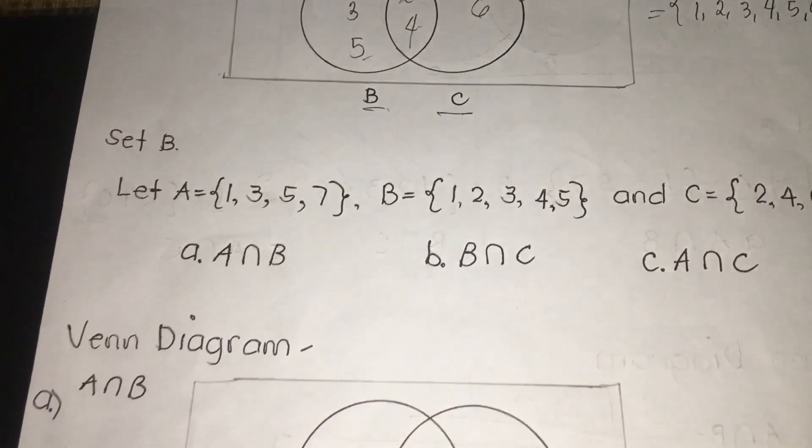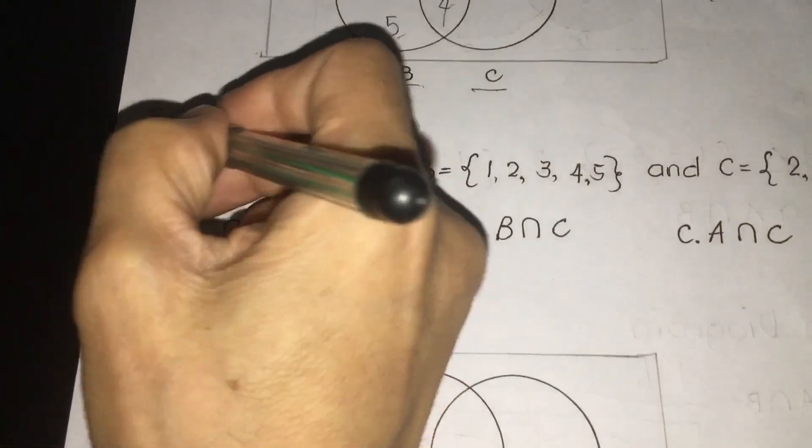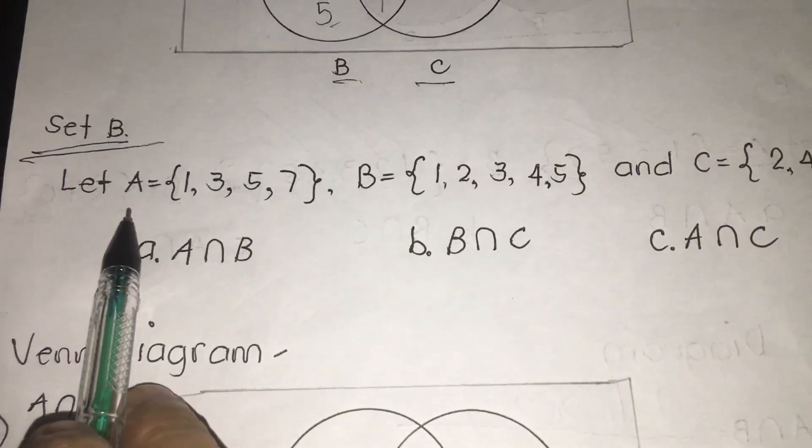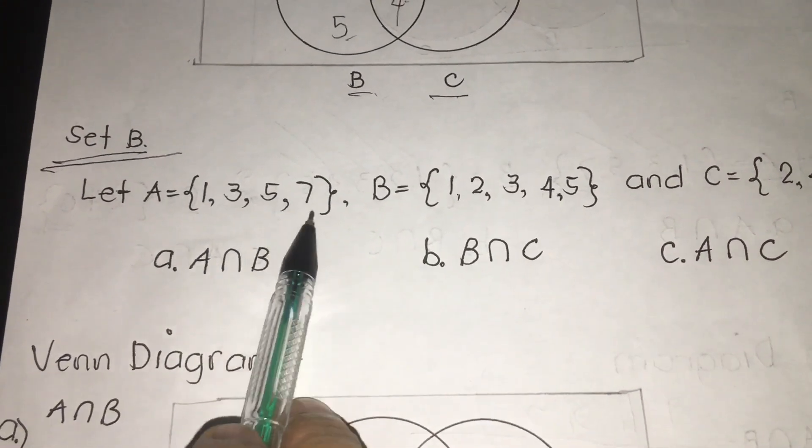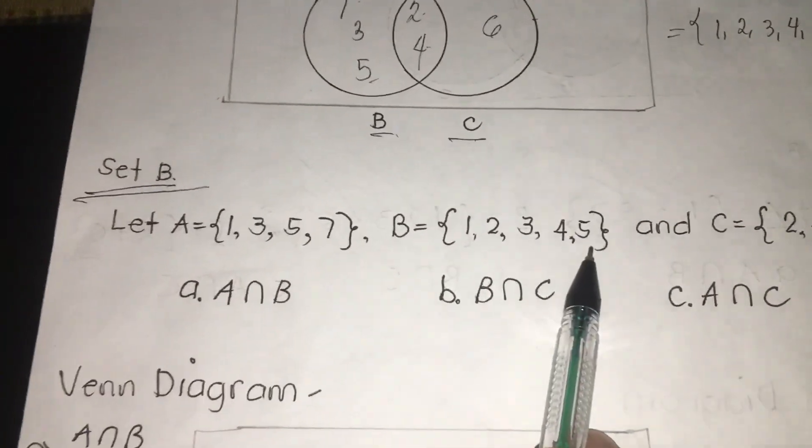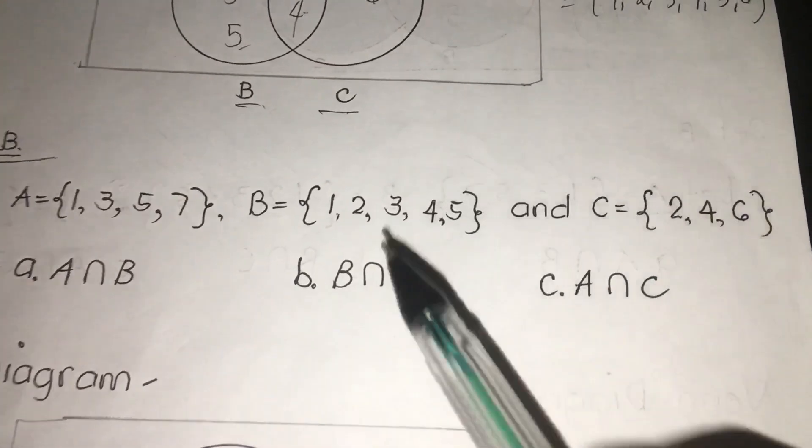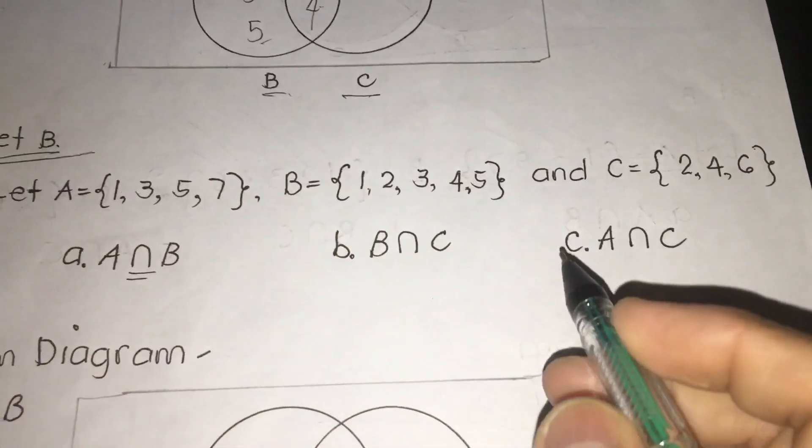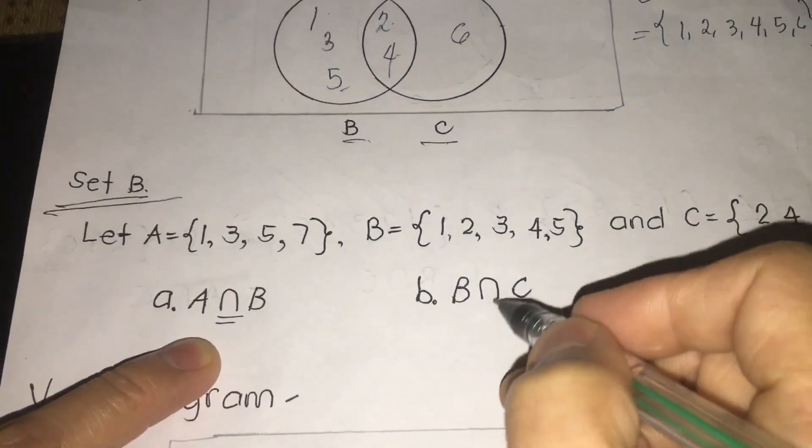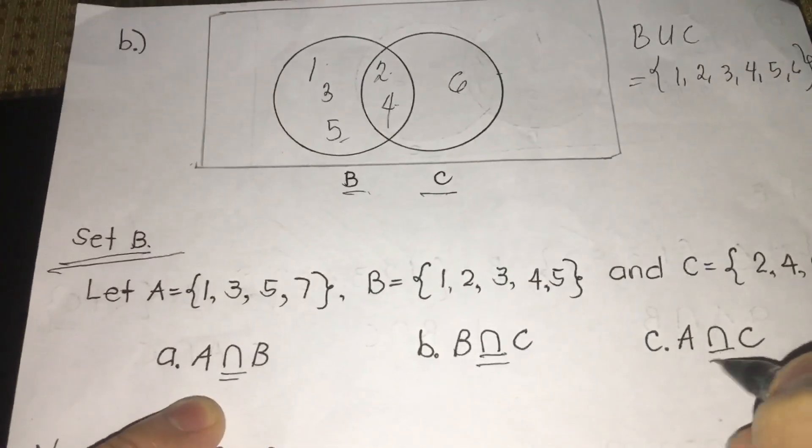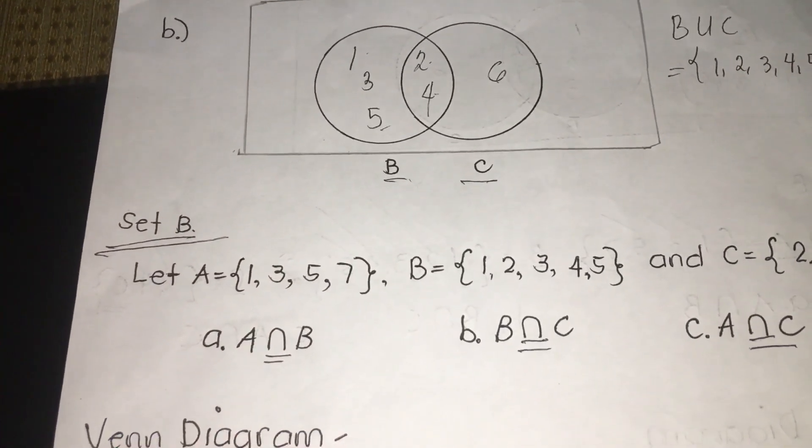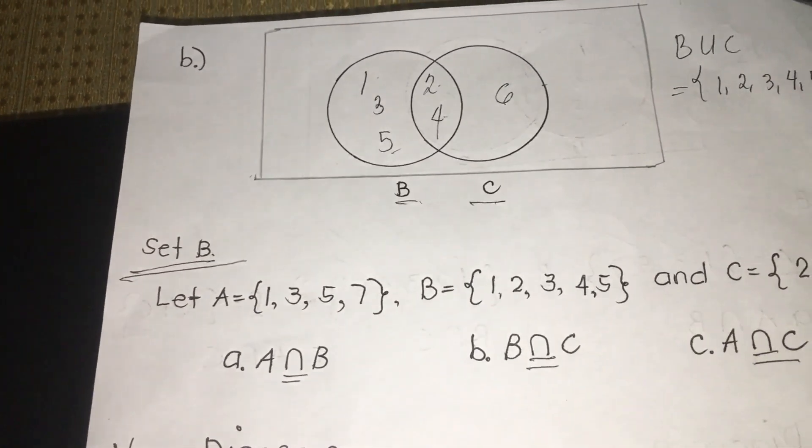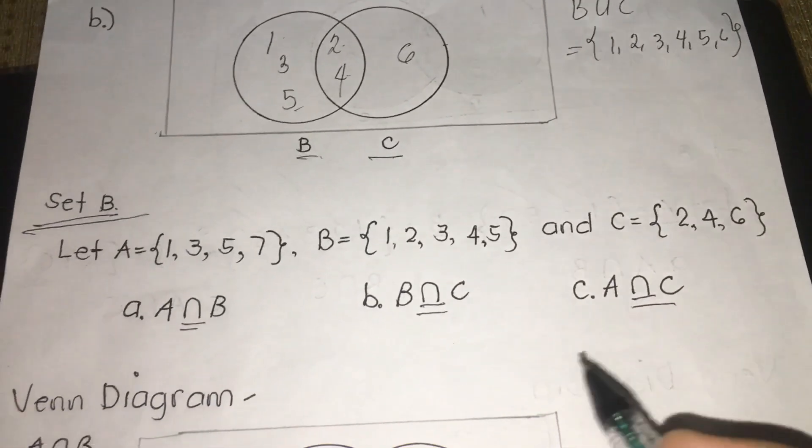Next, we're going to proceed for our third drill. We have given same procedure. Let A is 1, 3, 5, 7. B, 1, 2, 3, 4, 5. C, 2, 4, 6. Is it the same? No. Why? Because our second drill is about intersection. This is not a union, this is an intersection. What is intersection? All we have to do is we're going to jot down all the intersection. Please watch my video again.